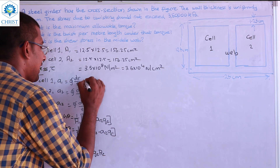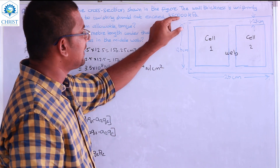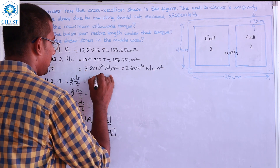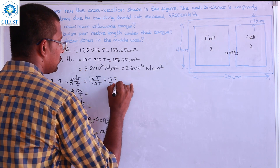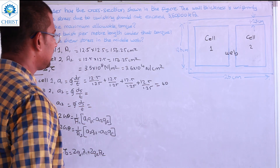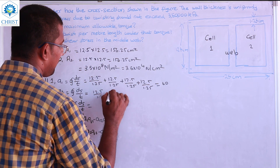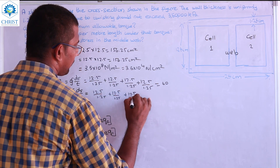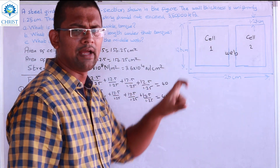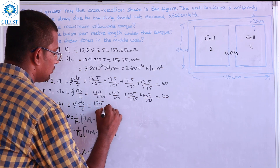Now we determine the values of a1, a2, and a12. For cell 1: a1 = 12.5/1.25 + 12.5/1.25 + 12.5/1.25 + 12.5/1.25 = 40. By symmetry, a2 is also equal to 40. For the shared web: a12 = 12.5/1.25 = 10.